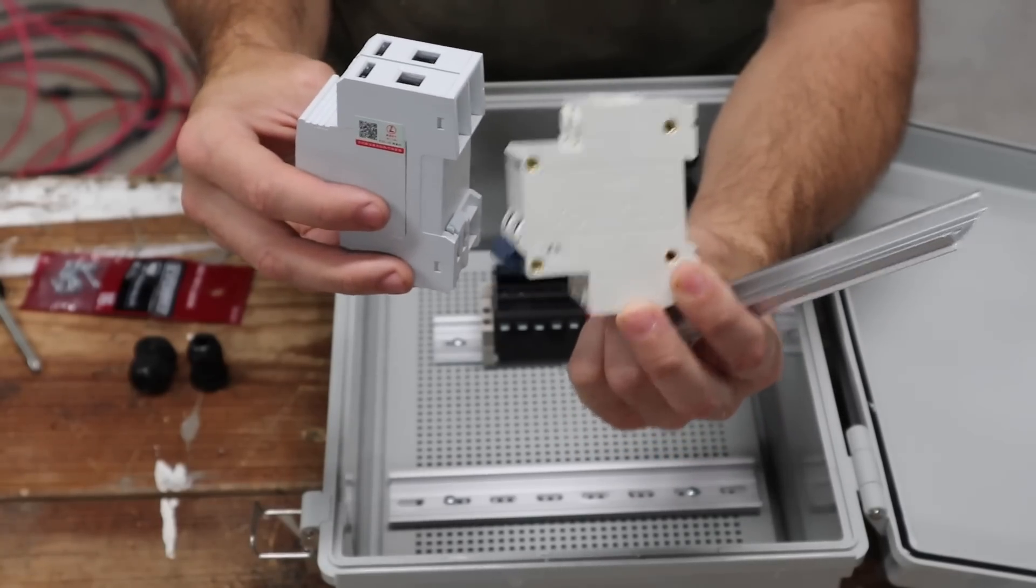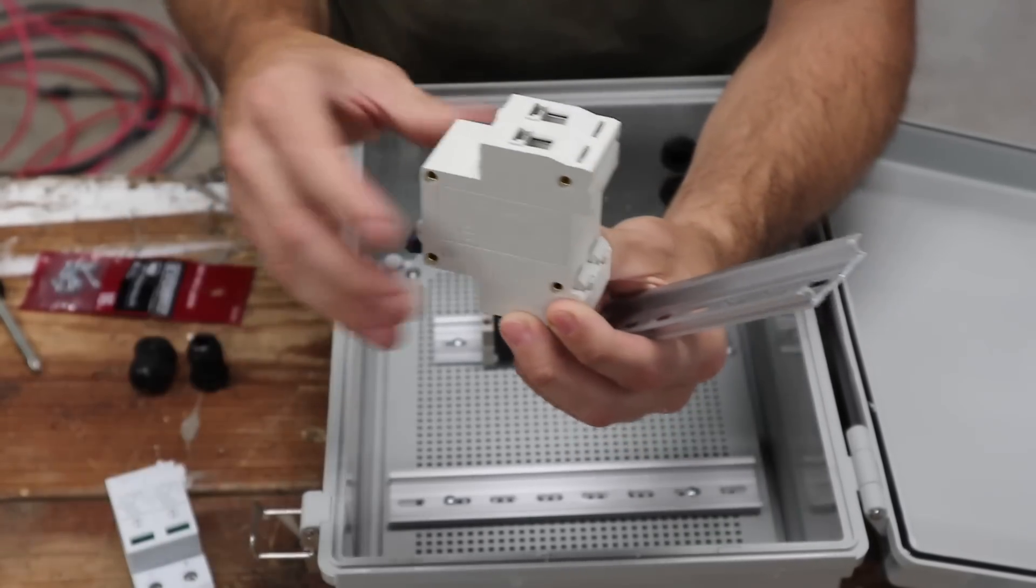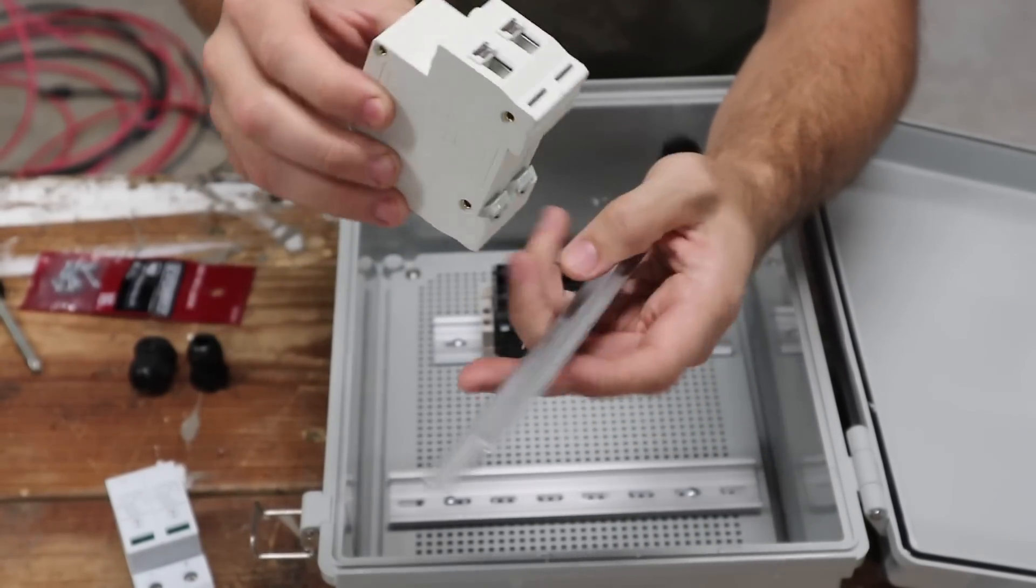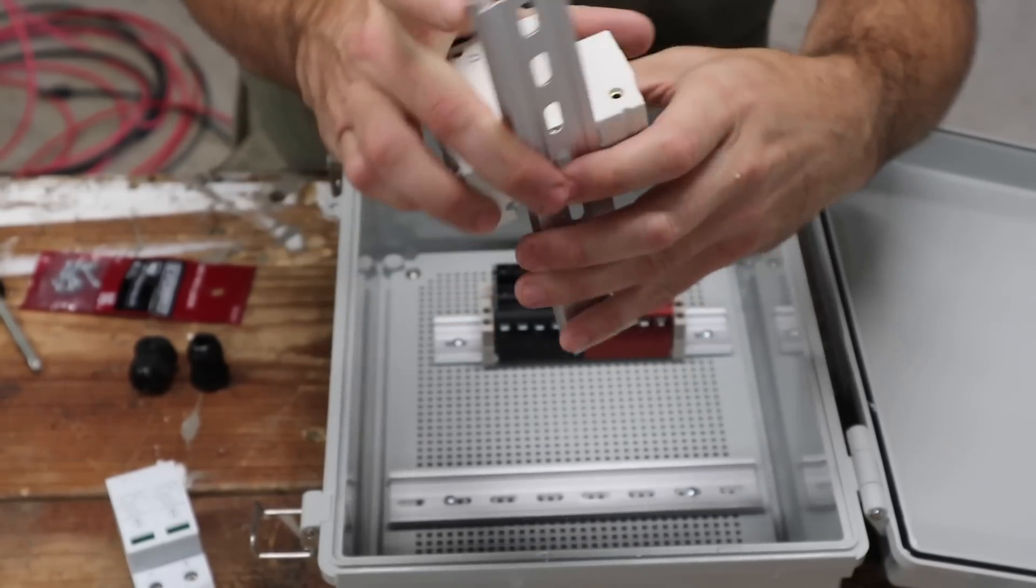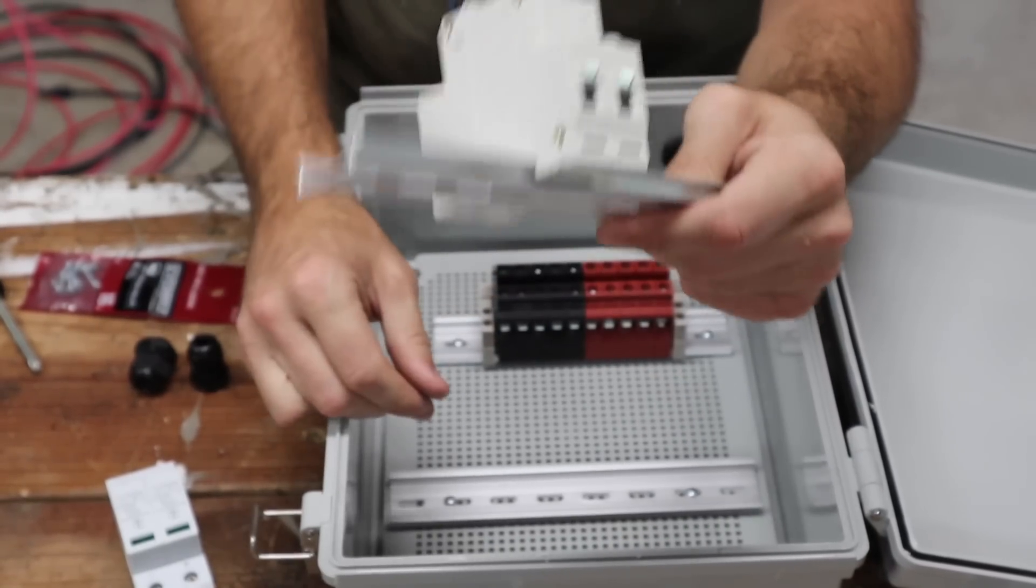And almost all of these DC devices, breakers and surge protection devices come to be mounted on this type of rail, which is called the DIN rail. They just basically snap on.